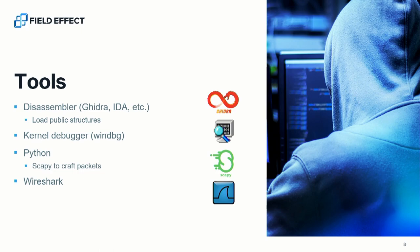A quick note on the tools I was using for this particular project: whatever disassembler you want - in my case I was using Ghidra. If you're doing something where there is source code available, like header structures, make sure you're loading any of those into the disassembler ahead of time. In this case, Windows uses the driver development kit, so you have a lot of structures and information you can load in, and that really helps with reverse engineering. You could load individual structures or use projects on GitHub for Ghidra to import all the kernel structures. Also WinDbg, Scapy to make packets, and Wireshark to make sure I was making the expected packets.